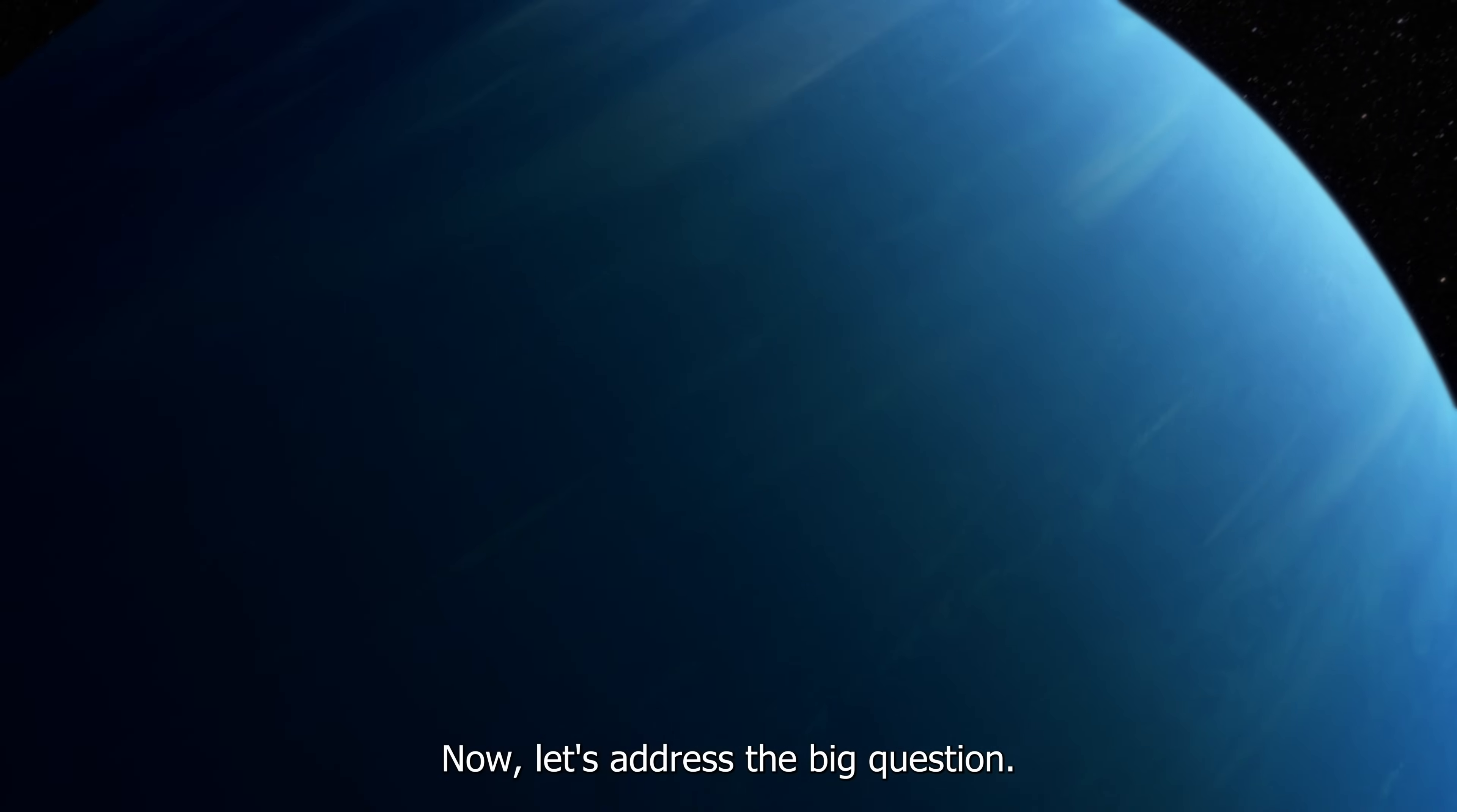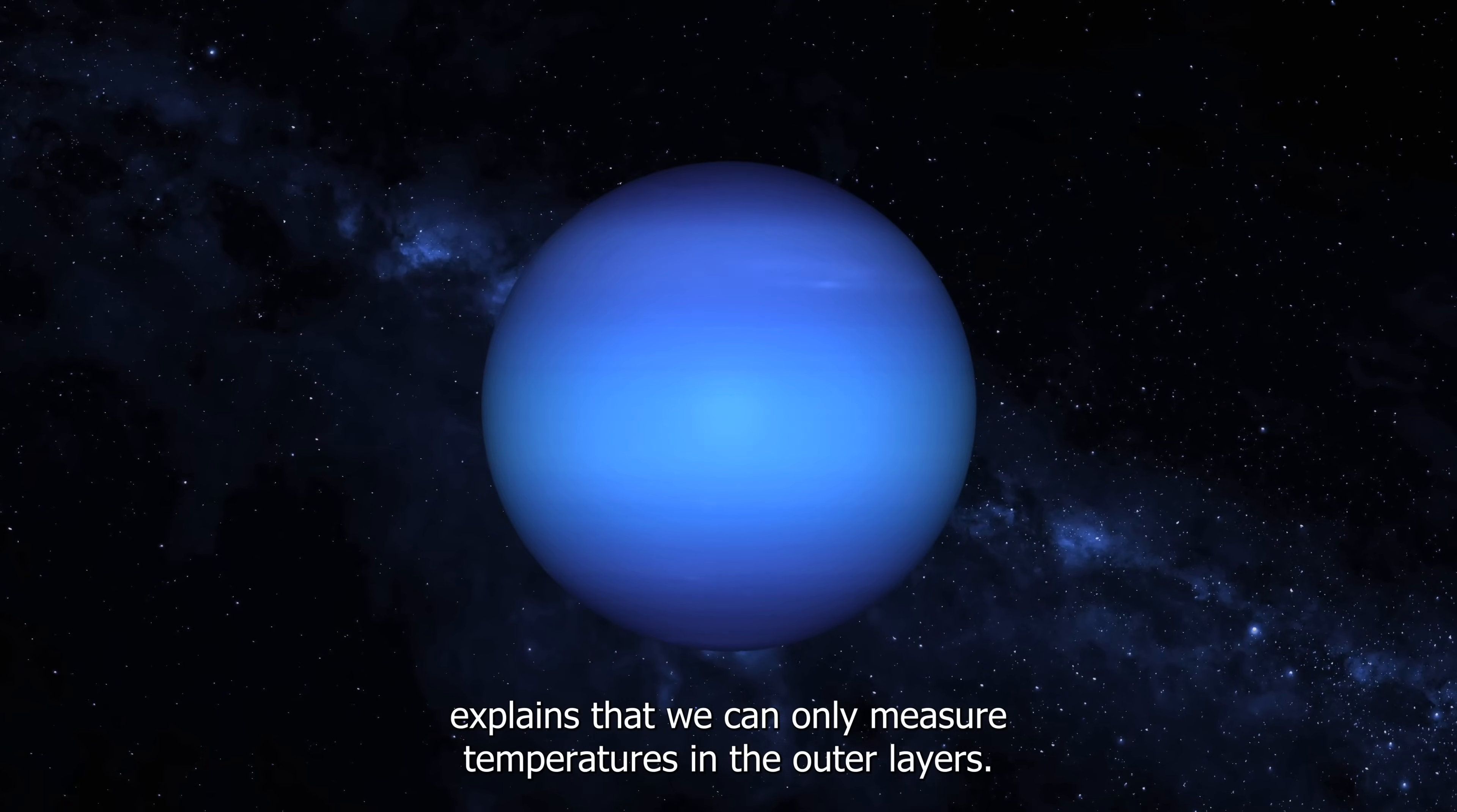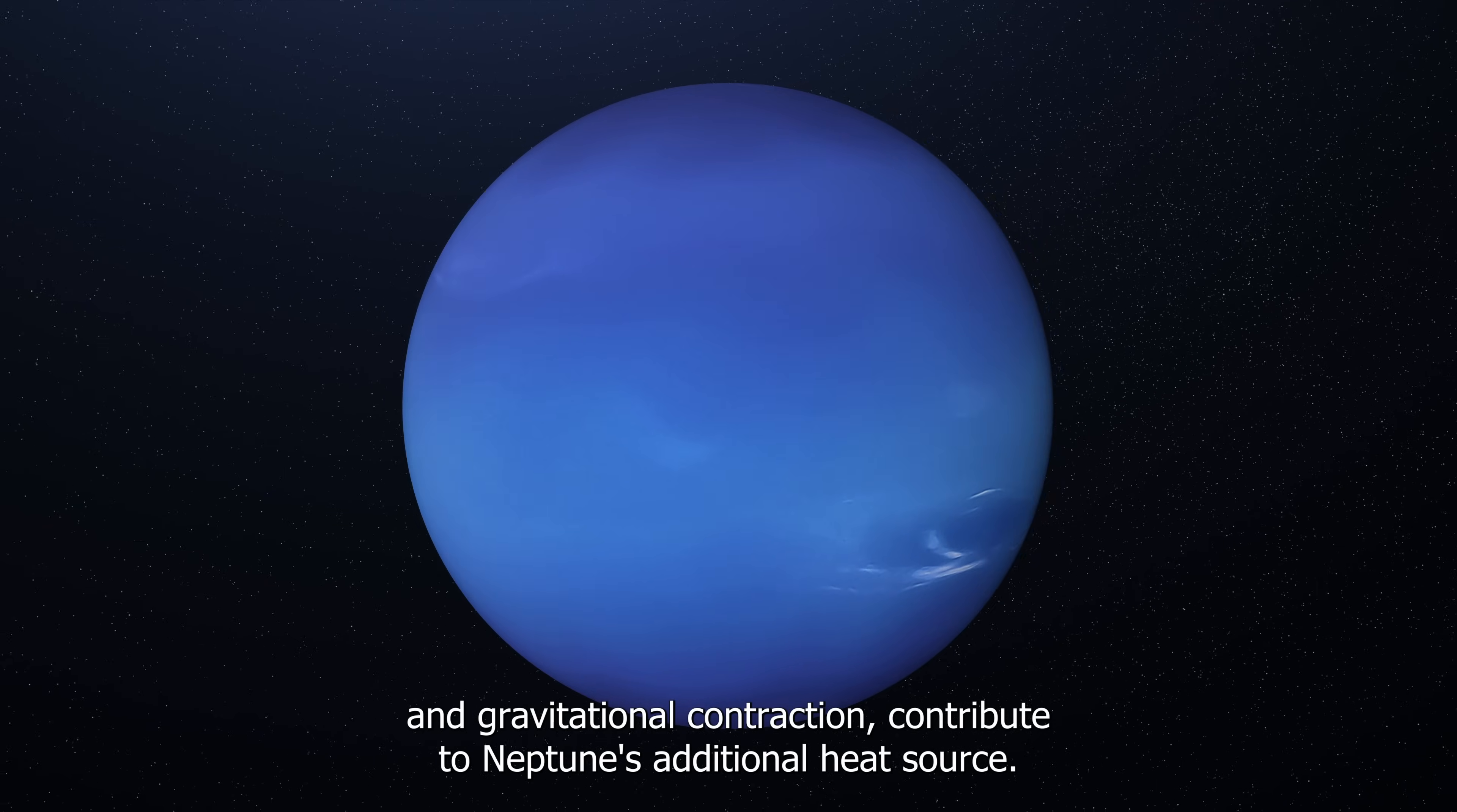Now, let's address the big question. Where does Neptune get its warmth? To solve this puzzle, we need to understand what it means for Neptune to be warmer. Keep in mind that Neptune is a giant ball of gas, so we can't measure its temperature on the ground like we do on Earth. Instead, we have to take measurements higher up in its atmosphere. Michael Wong, a scientist at the University of California, Berkeley, explains that we can only measure temperatures in the outer layers. Scientists found that Neptune gives off more heat than it absorbs, and this extra warmth comes from inside the planet. In Neptune's case, it's from the heat left over when the solar system was born, contracting from the original solar nebula. This process, known as Kelvin-Helmholtz contraction, and gravitational contraction contribute to Neptune's additional heat source.